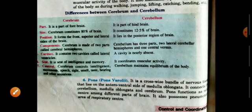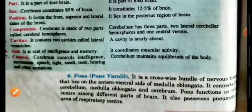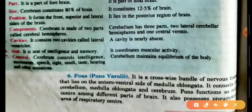The second part of the hindbrain is the pons, which is situated at the anteroventral side of the medulla oblongata. This part is involved in controlling breathing or respiration.